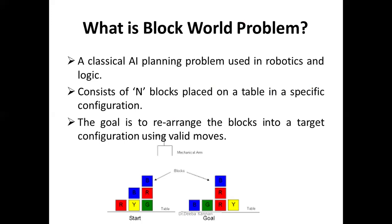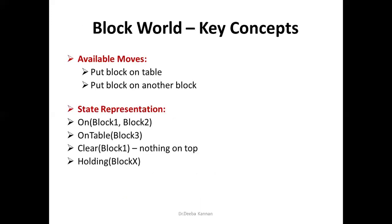There is a stable block. We arrange a goal. There is a robotic arm and there are many blocks on the table. If we arrange a set of blocks, we can arrange a block world problem automatically. This is a block world problem. There are some moves available.